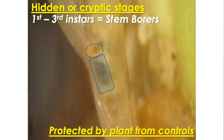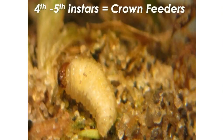The next factor that makes them difficult to control is that they have cryptic stages — they hide their stages into the plant. Eggs are deposited into the stem of the plant, especially on low-cut turf. They spend one to three instars inside the plant, which protects them from most chemical controls, especially those that work through contact activity. Hidden or cryptic stages makes it very, very challenging.